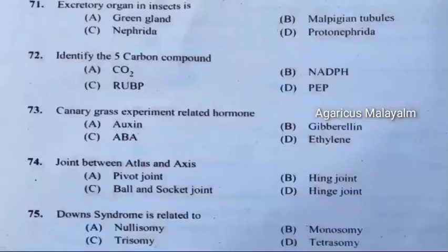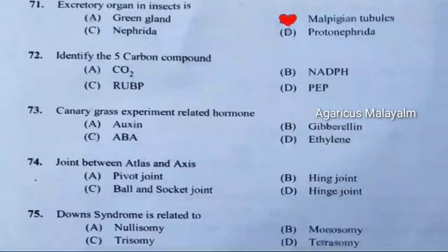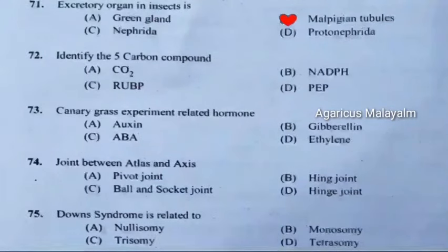Question 71: Excretory organ in insects. Correct answer is Option B: Malpighian tubules. Question 72: Identify the 5-carbon compound. Correct answer is Option C: RuBP.